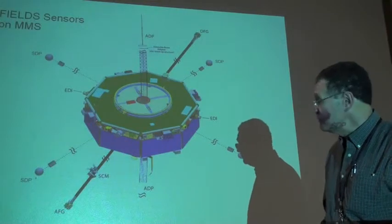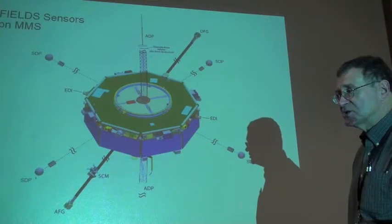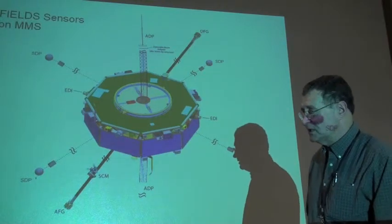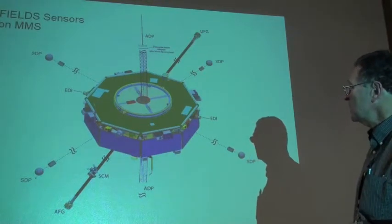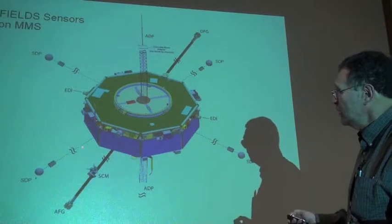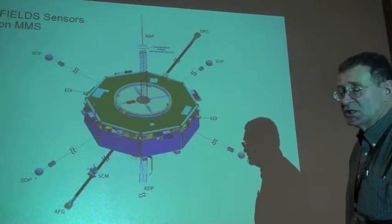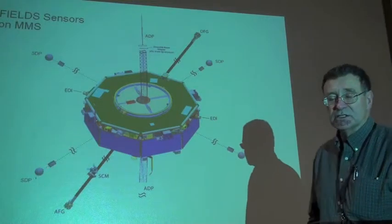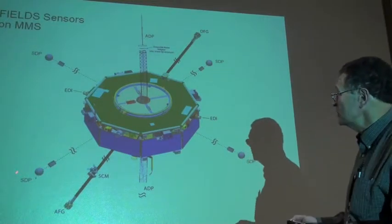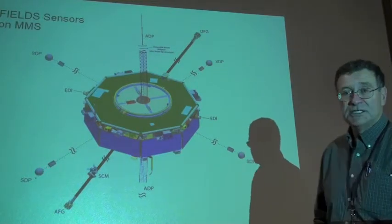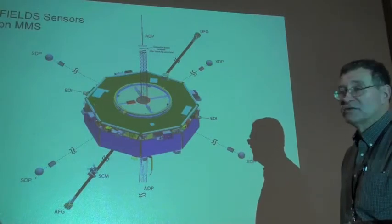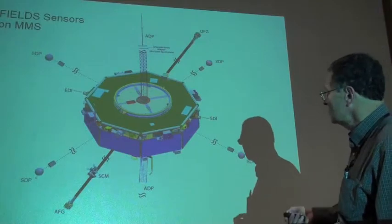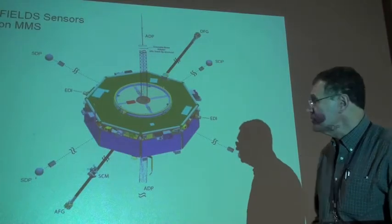One of the challenges in spacecraft measurement is capturing a three-dimensional electric field, the full electric field vector. This requires very large booms. These very thin wire booms are 60 meters in radius, so there's about 120 meters tip to tip. That's a good football field between this spherical probe and that spherical probe out in space.